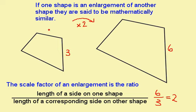So if I know that this side is 2, then this corresponding side here is 2 times 2, which is 4. Also, if I'm told that this side has length 10 and I want to find this side here, then I know that the opposite of times 2 is divide by 2. So to go from this shape to this shape, I divide by 2, and that gives me the length of this corresponding side here as being 5.